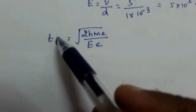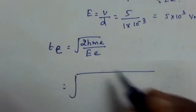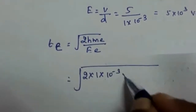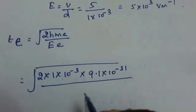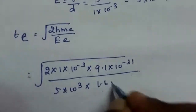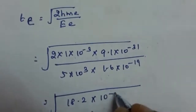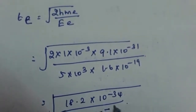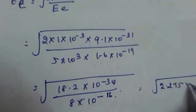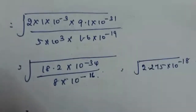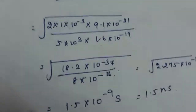Time of flight for the electron: t_e = √(2h·m_e / eE) = √(2 × 1×10⁻³ × 9.1×10⁻³¹ / (5×10³ × 1.6×10⁻¹⁹)) = √(18.2×10⁻³⁴ / 8×10⁻¹⁶) = √(2.275×10⁻¹⁸) ≈ 1.5×10⁻⁹ seconds, which is 1.5 nanoseconds.